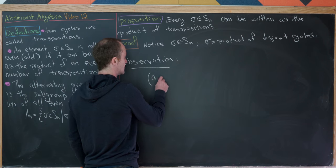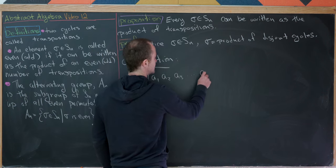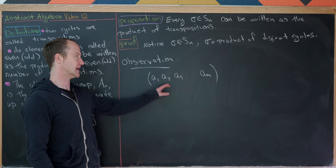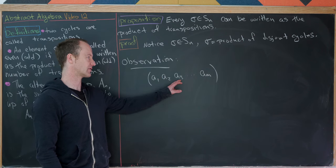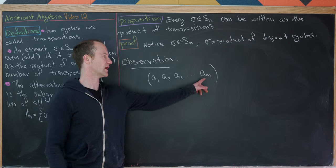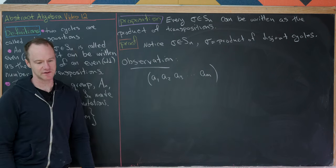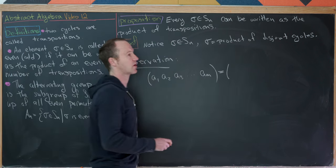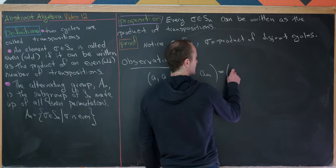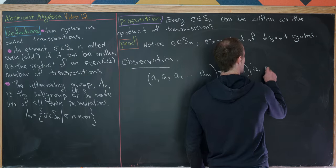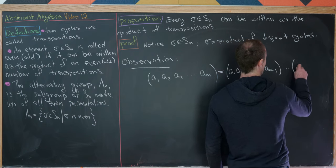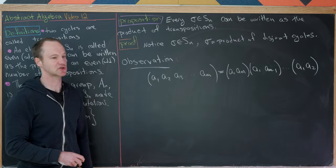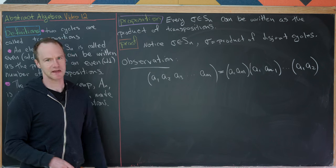Let's take an M-cycle A1, A2, A3, up to AM. This means A1 is sent to A2, A2 to A3, and so on, with AM sent back to A1 — a big loop. This M-cycle can be written as the product of transpositions: (A1, AM)(A1, AM−1)···(A1, A2). Notice these are not disjoint transpositions, but that makes sense.